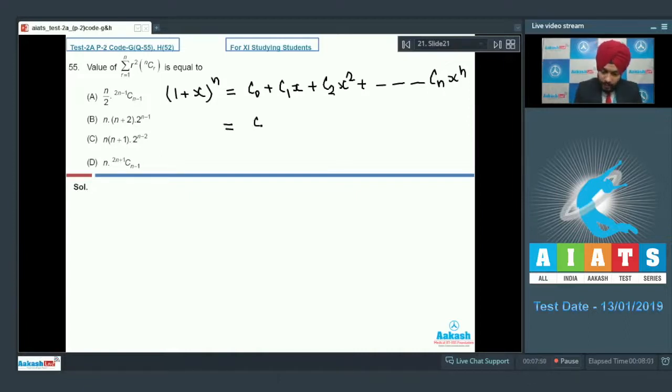Let us differentiate it. C1 plus 2 C2 x, 1 into C1 plus 2 into C2 x, 3 into C3 x square, and so until n into Cn x power n. The left hand side will be n into 1 plus x raised to the power n minus 1.